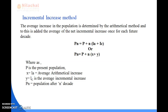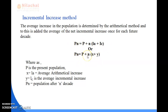In the incremental increasing method, the formula is: Pn equals to P plus N into (IA plus IC), or equivalently Pn equals to P plus N into (X plus Y). Here Pn is the population after N decades, P is the present population, and N is the number of decades.